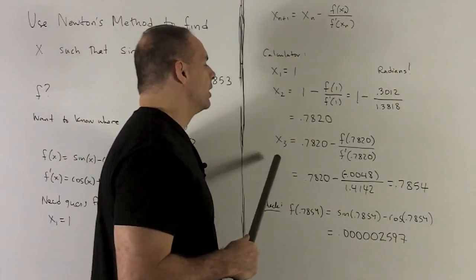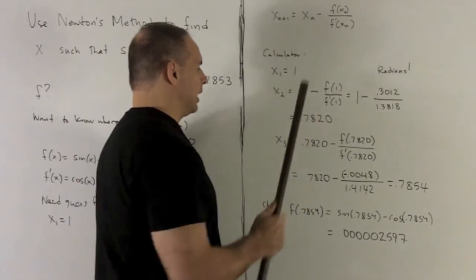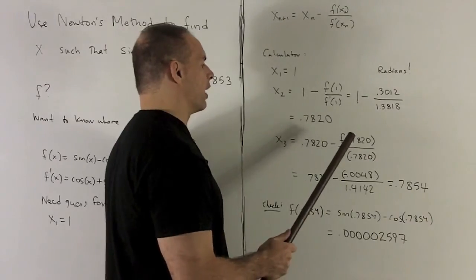I go to my second iteration. We're going to stick in 0.7820. So that's going to give me 0.7820 minus f of 0.7820 over f prime of that.